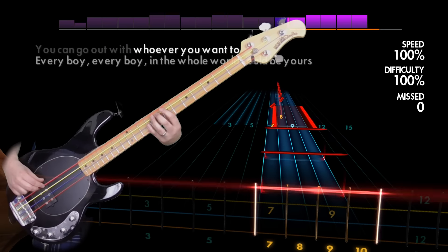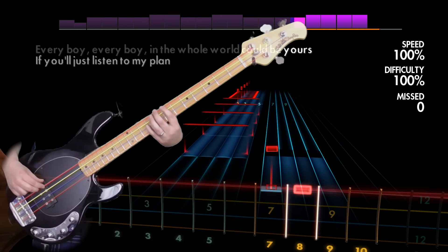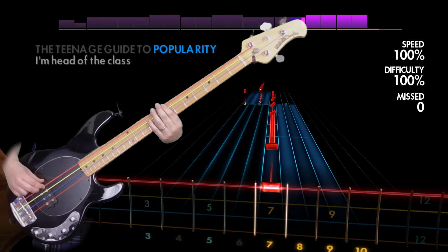You don't need date insurance. You can go out with whoever you want to. Every boy in the whole world can be yours if you'll just listen to my plan. The teenage guide to popularity.